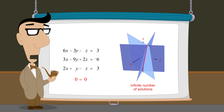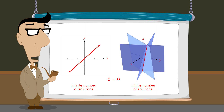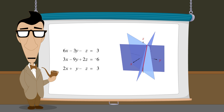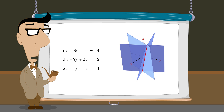You may recall from previous chapters that obtaining an equality between two equal numbers in systems of two linear equations in two variables also indicates an infinite number of solutions. So what if the system we are trying to solve is inconsistent, having no solutions? To create a system with no solutions, let's modify the third equation so its plane is oriented in a way that creates no points common to all three planes.